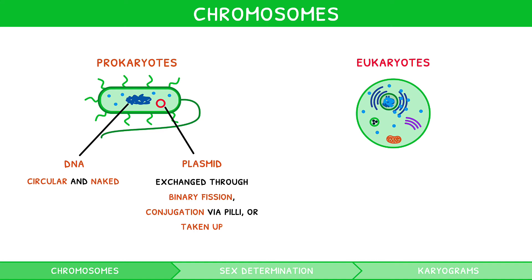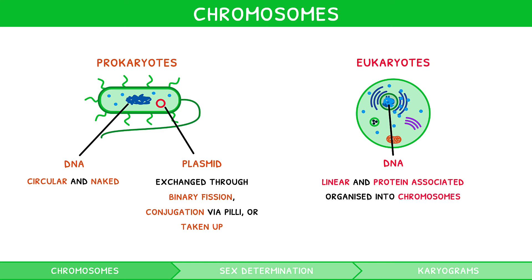In eukaryotic cells, DNA is linear and protein-associated. As you know, it is organised into chromosomes, which come in varying shapes and sizes, depending on the centromere position and length. In humans, there are 23 different chromosome pairs.